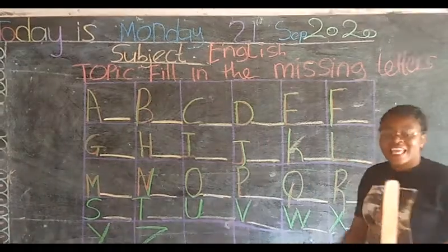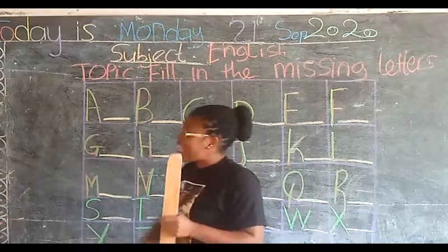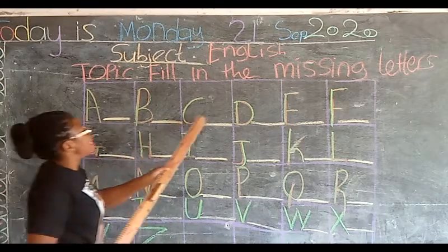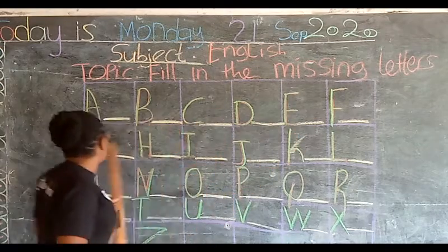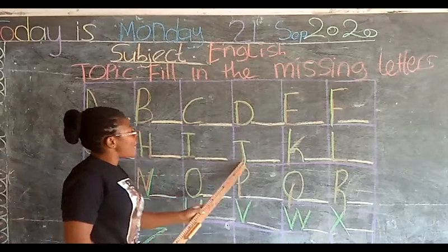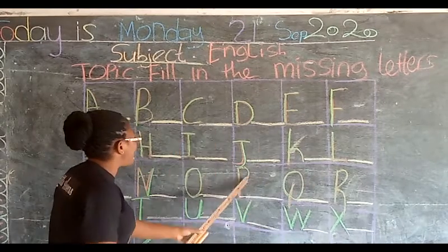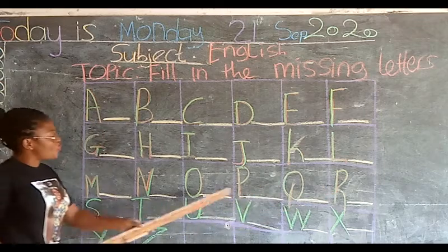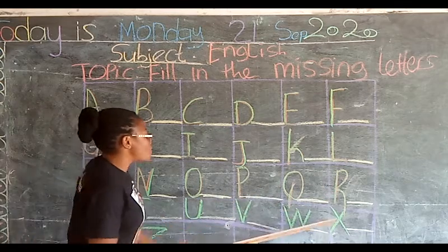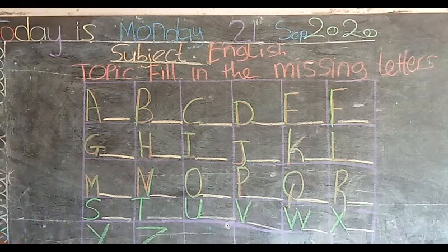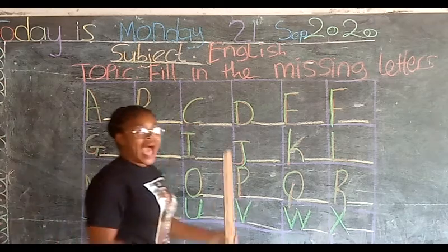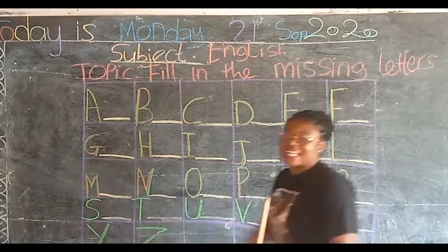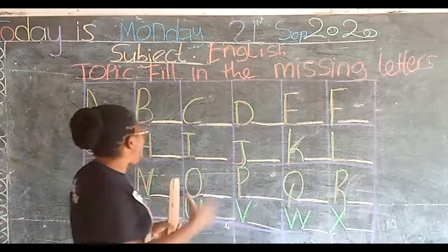Now I know my A, B, C — L, M, N, O, P, Q, R, S, T, U, V, W, X, Y, and Z. Now I know my A, B, C — 26 letters in the alphabet.